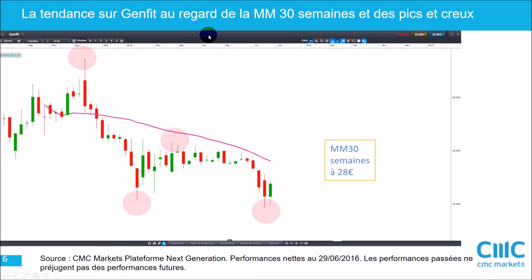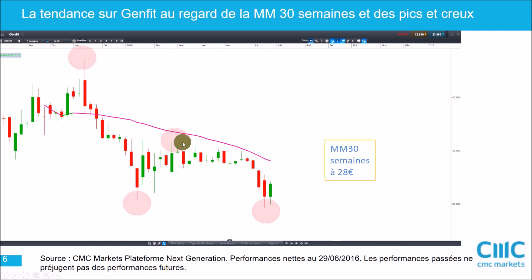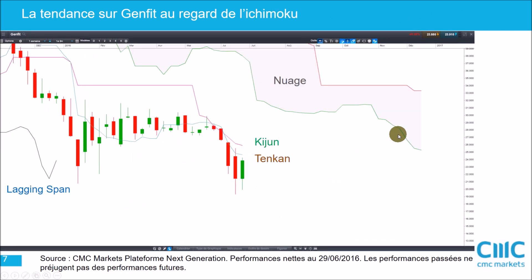On enchaîne cette série d'analyses avec Genfit, qui m'a été très nombreuses fois demandé. On n'est pas du tout dans la même configuration que sur Nikox : la moyenne mobile à 30 semaines est descendante. Quand on passe en dessous de la moyenne mobile à 30 semaines et que son inclinaison devient négative, on est en situation de danger — on se retrouve dans une situation assez périlleuse. C'est confirmé par l'autre système qui montre que les pics sont descendants et les creux sont descendants, ce qui indique clairement que la tendance est toujours baissière pour l'instant.